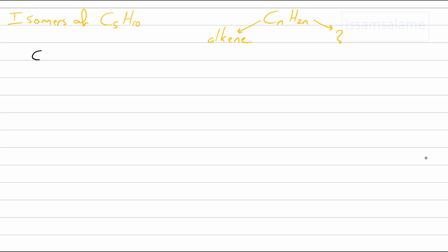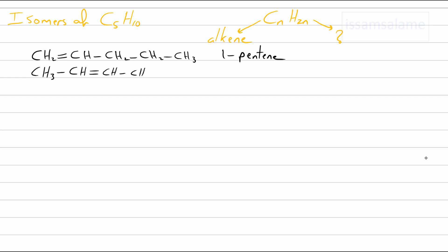By the way, you will find many links in the description showing you how to differentiate between a branched and straight alkane, and also how to name alkanes, alkenes, and different organic compounds. Here we have a five-carbon-atom alkene with the double bond at the first carbon, so it's called 1-pentene. What if the double bond is between the second and the third carbon? Then it's going to be called 2-pentene.